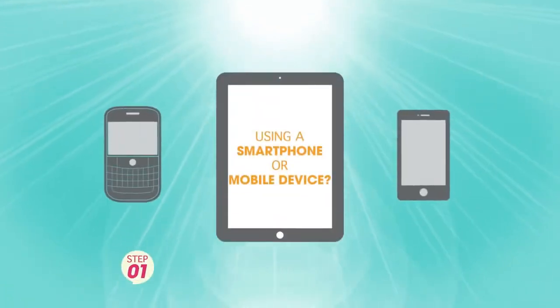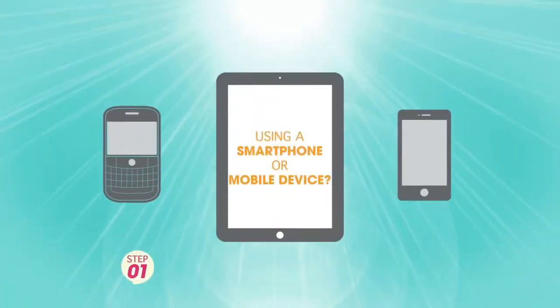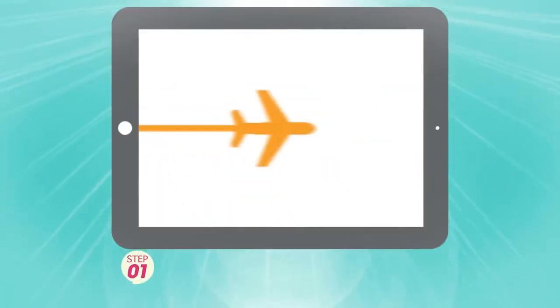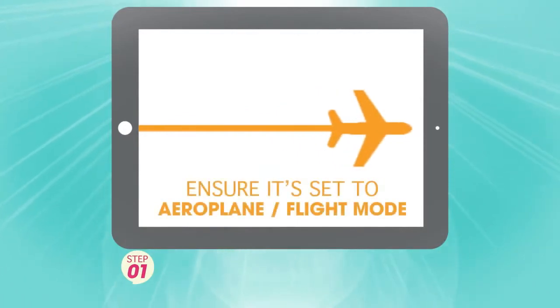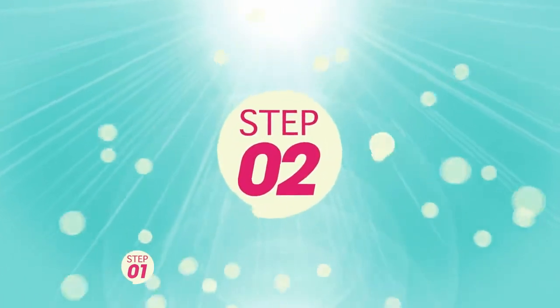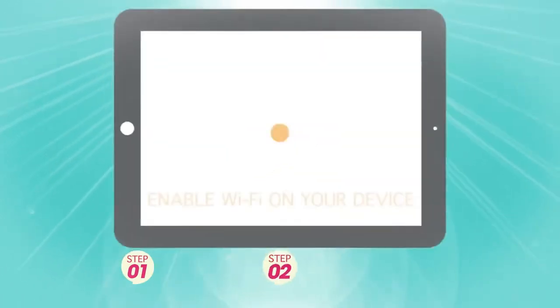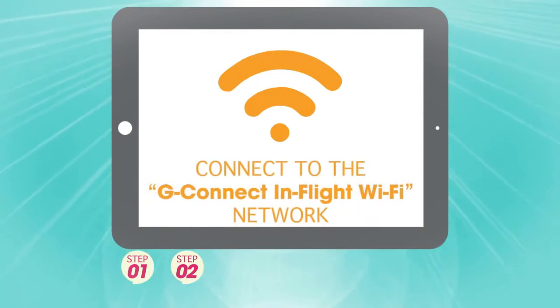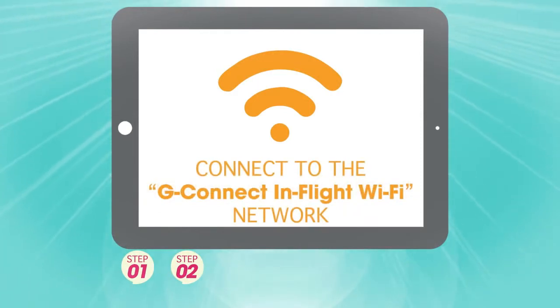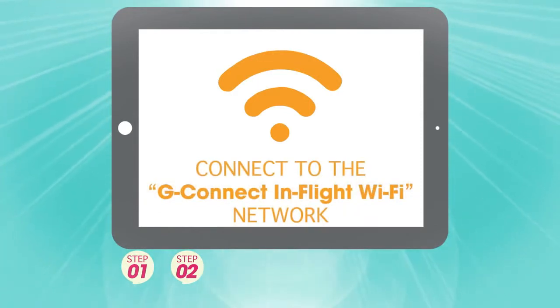Step 1. If you are using a smartphone or mobile device, please ensure that your device is set on airplane or flight mode. Step 2. Enable the Wi-Fi on your device and connect to the G-Connect In-Flight Wi-Fi network.